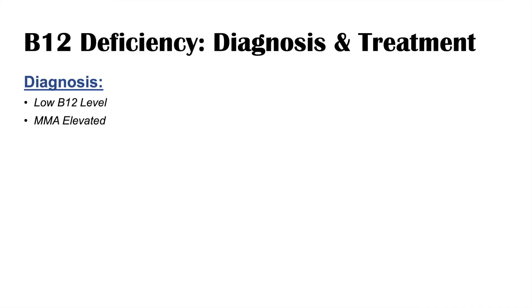How do we make the diagnosis and treat B12 deficiency? The diagnosis includes looking at a B12 level — we're going to see a low B12 level. We can also look at methylmalonic acid levels, which will be elevated. Homocysteine can be elevated in B12 deficiency, but it's also elevated in folate deficiency, so it's not a good distinguishing marker. Methylmalonic acid is the one you always want to check — it's elevated in B12 deficiency and normal in folate deficiency.